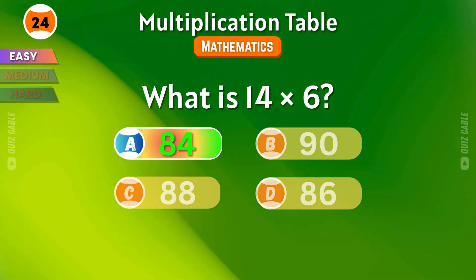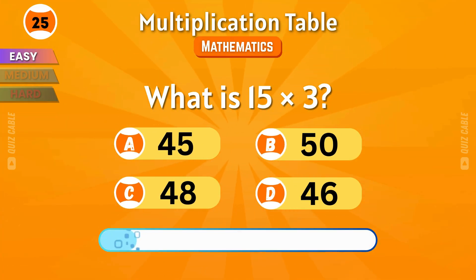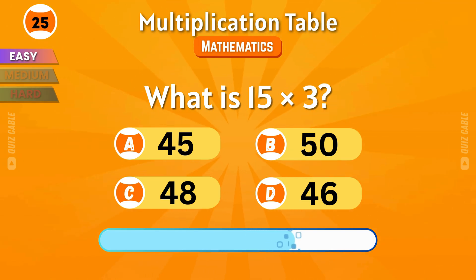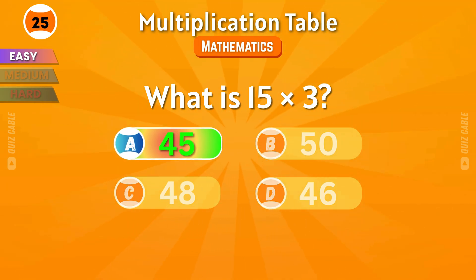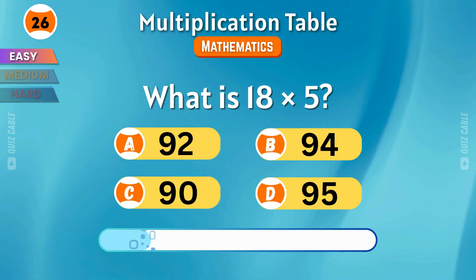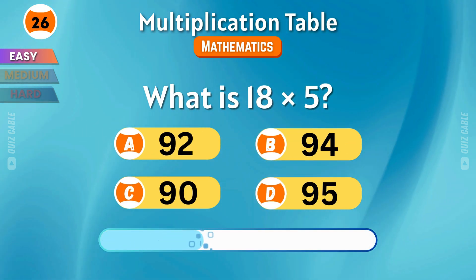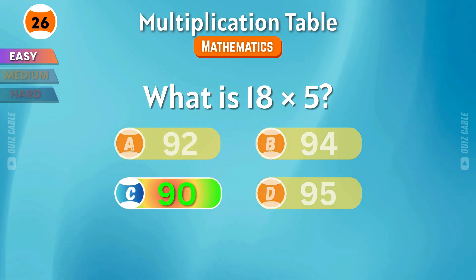What is 14 times 6? That's 84. What is 15 times 3? That makes 45. What is 18 times 5? You're right — 90.